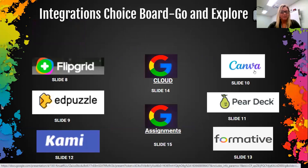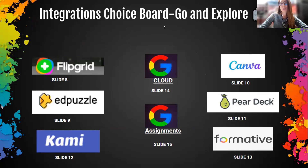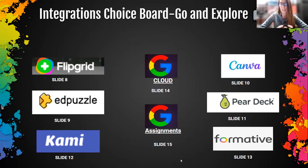So that was the external tool. Now this is where we wanted to give you a little choice. We've got all of these integrations we introduced at the very beginning — Flipgrid, Edpuzzle, Kami, Google, Canva, Pear Deck, and Formative. Each of these links to a specific slide that has a short video showing you how to integrate all of these digital tools inside Canvas LMS. If you're watching this video, what we ask you to do is just hit pause and go explore. And then we'll come back together in a few minutes and think about some ahas and things we really liked about these integrations.